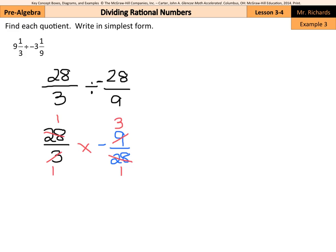So 1 times the negative 3 is a negative 3 over 1 times 1 is 1. So I can simplify this as just negative 3.